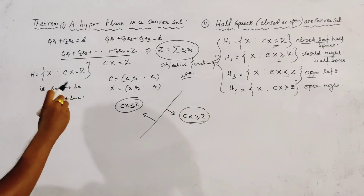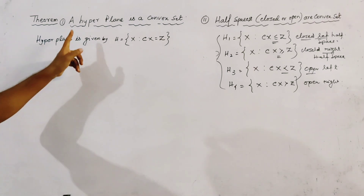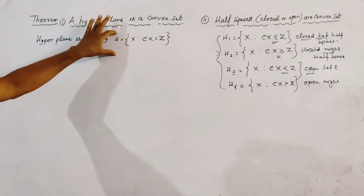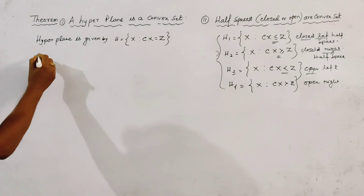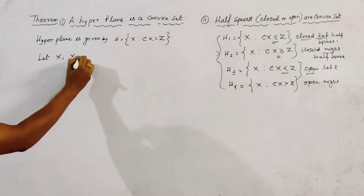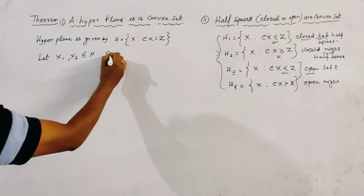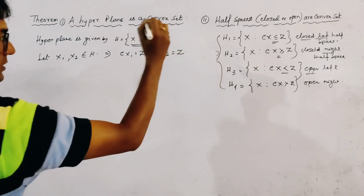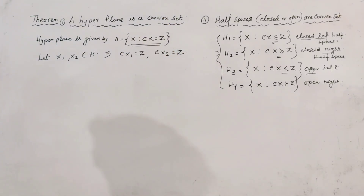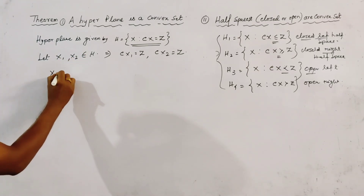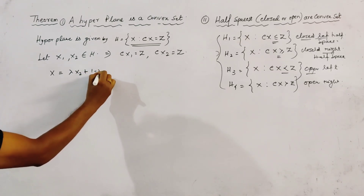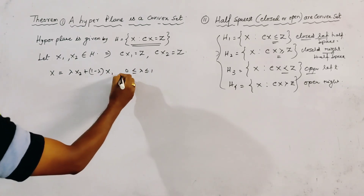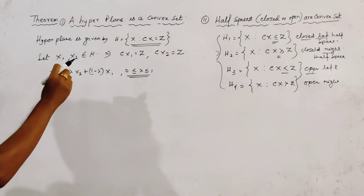Now we are going to prove the theorems one by one. To show a hyperplane is a convex set, we first define the hyperplane and write it in set notation as H. We let x1 and x2 be any two points of H. Then from the condition of the set, we must write cx1 = z and cx2 = z.